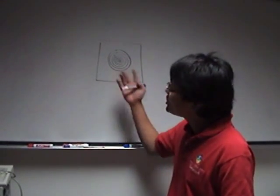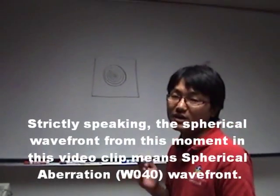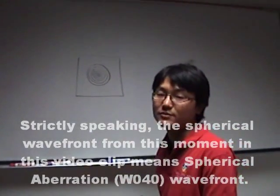So in this case, this CGH will provide you a spherical wave front after it passes through this CGH substrate.